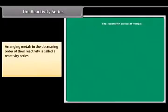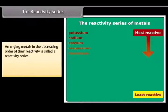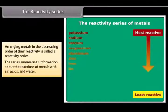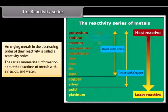The reactivity series. Metals being arranged in the decreasing order of their reactivity is called a reactivity series. It is used to summarize information about the reactions of metals with air, acids and water.